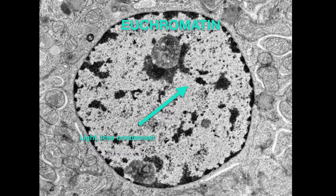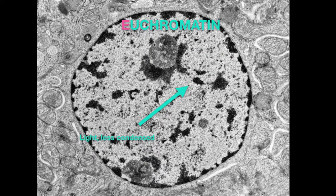Euchromatin, on the other hand, is less condensed, sterically accessible, and is thus transcriptionally active. Remember that EU is the prefix for good — euchromatin is the good chromatin because it will be transcribed. Another way to remember is that euchromatin is expressed.